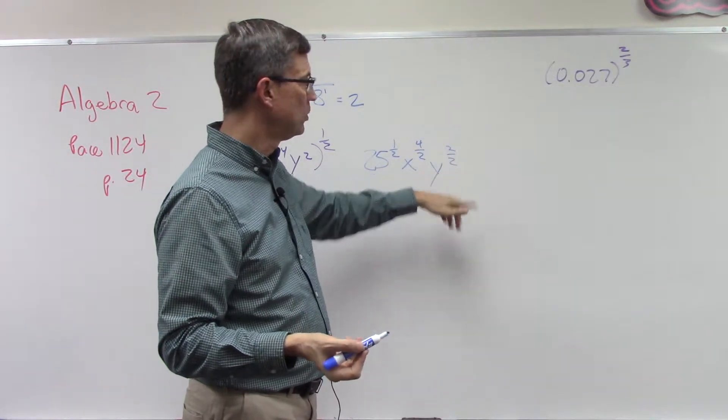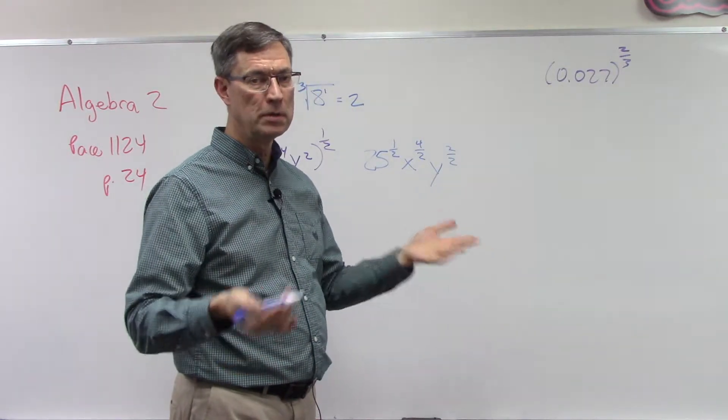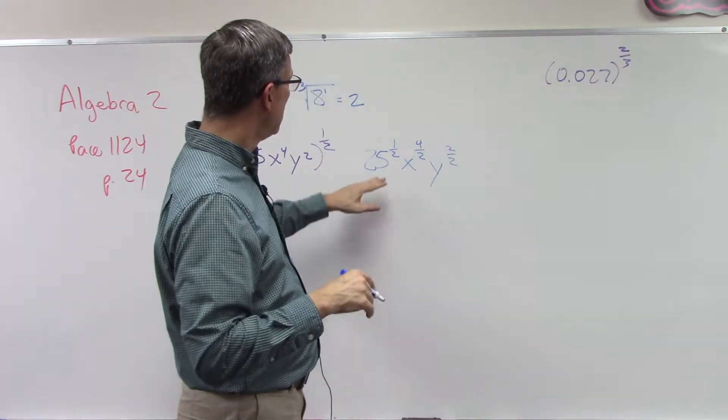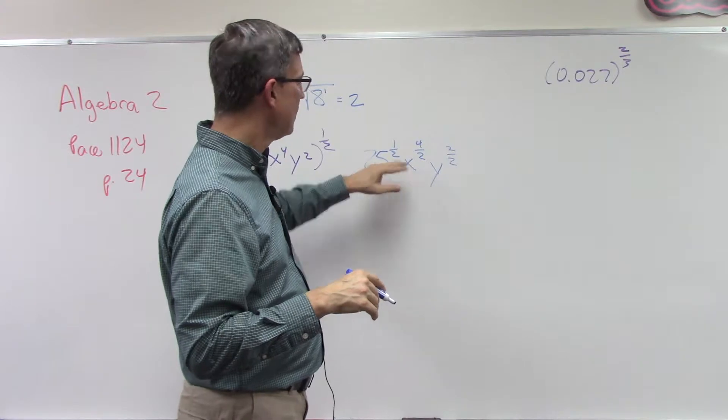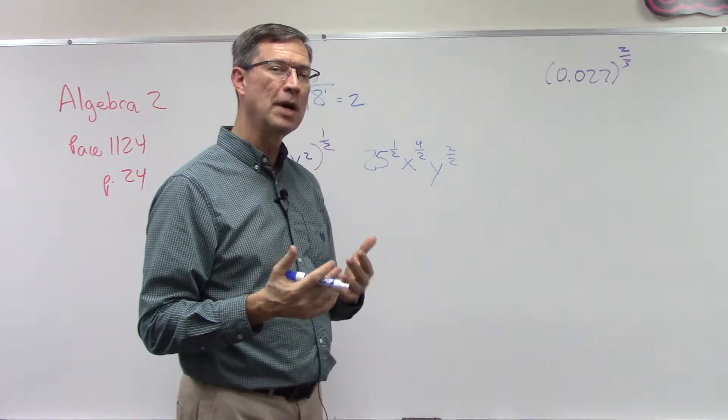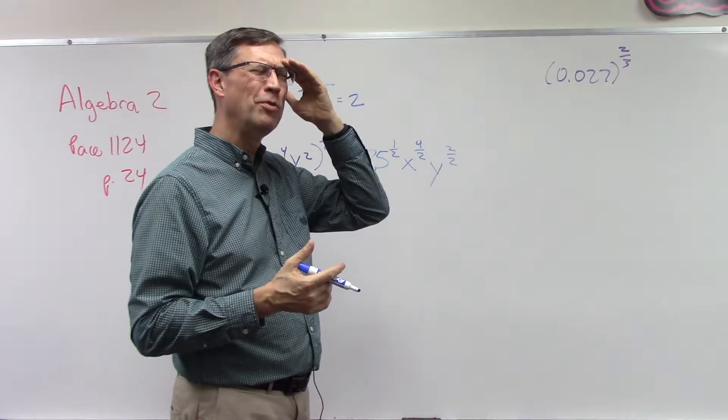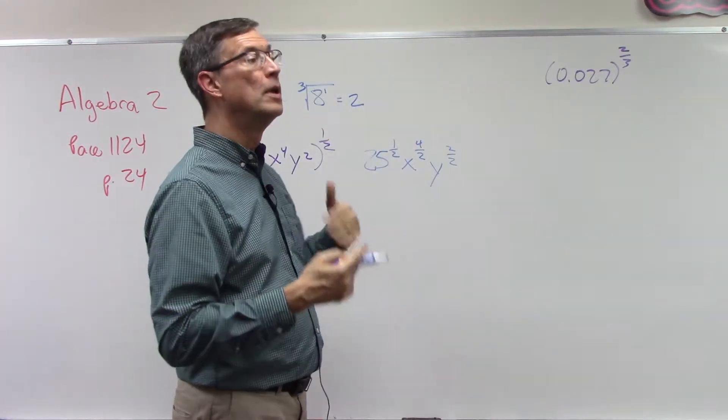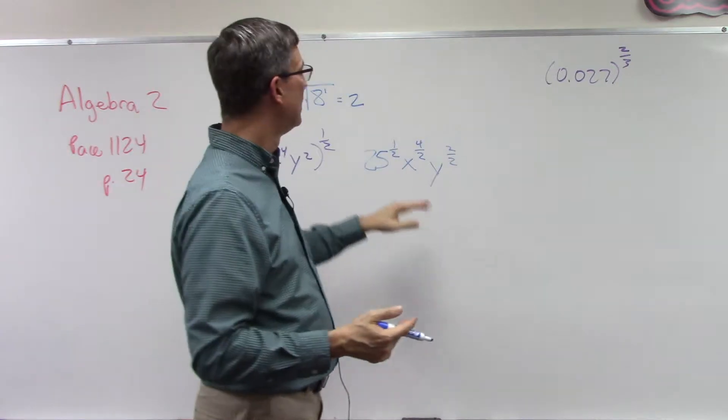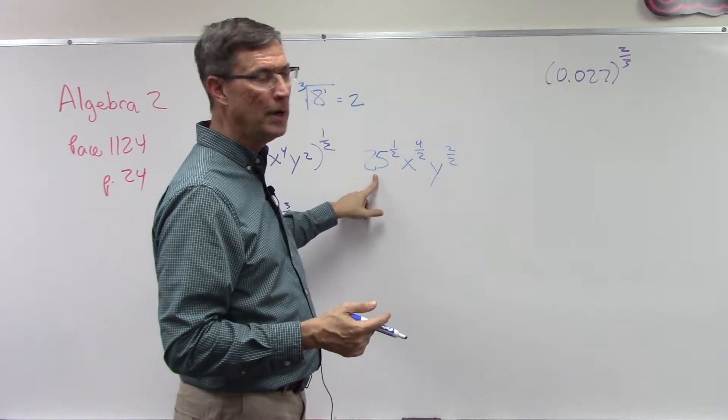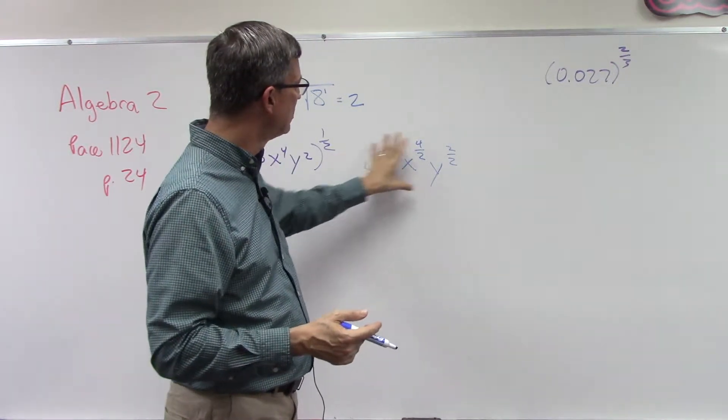Anything to the 1 by itself is just itself. Then this 25 to the half does not mean half of 25. That's the most common mistake that students make when they look at this. What number times itself equals 25? I'll let you finish that one. I think you have that one in your homework.